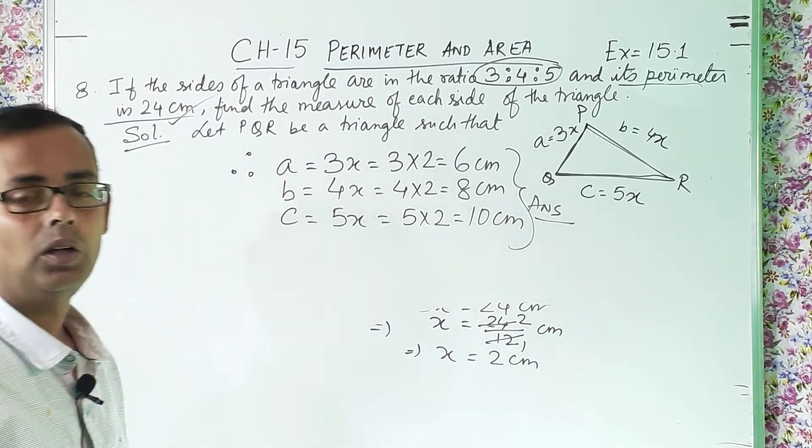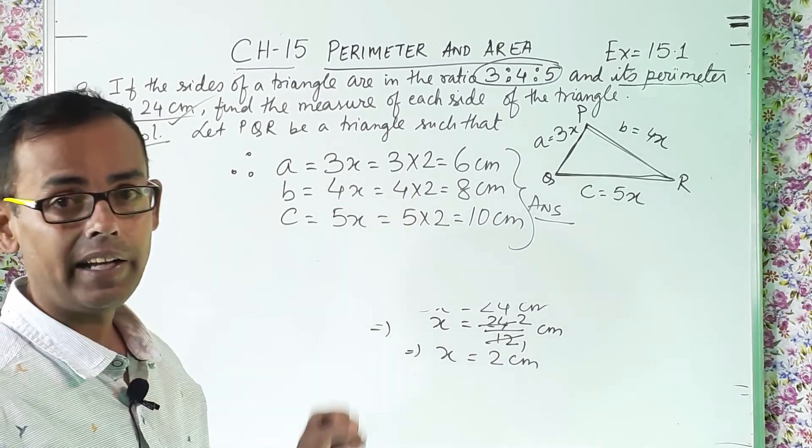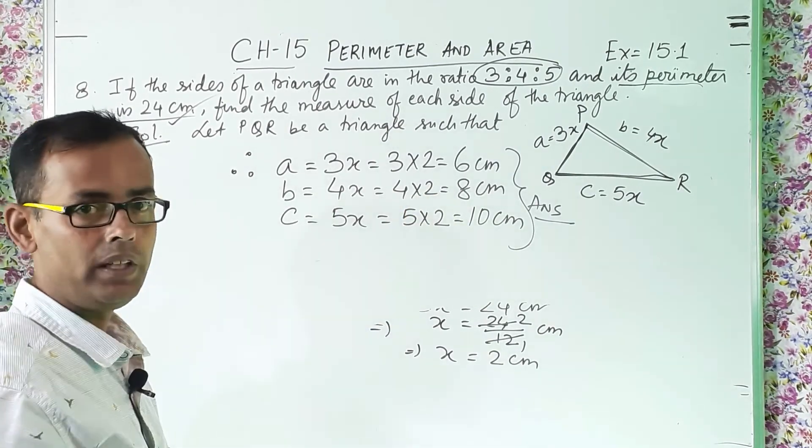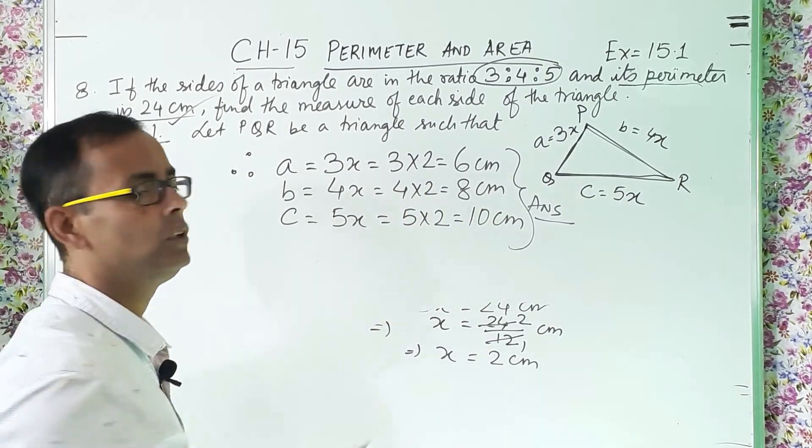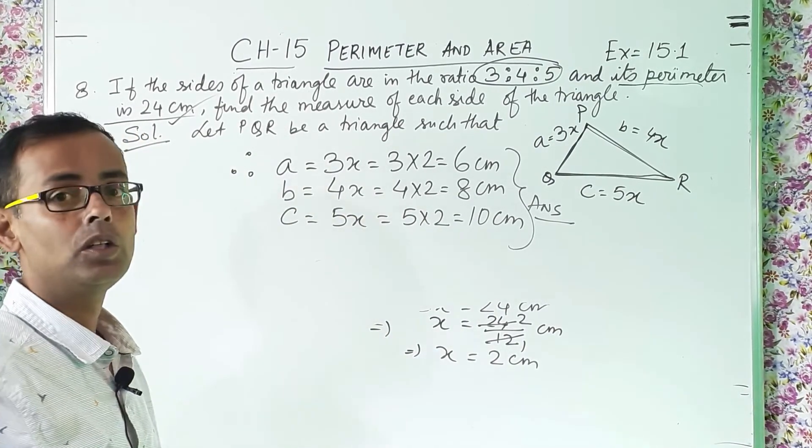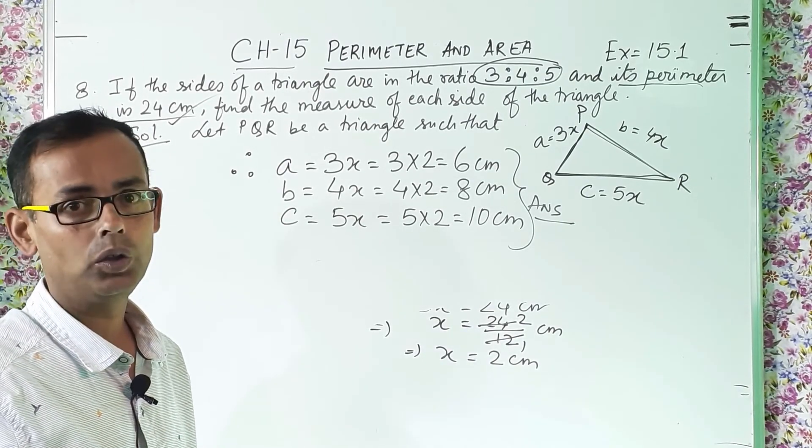Clear? Now you will be thinking that these answers are correct or no. You add it. 6 plus 8, 14. 14 plus 10, 24. And the perimeter is also 24. So you can cross check also, whether your answer is right or wrong. I hope you have understood the sum nicely.